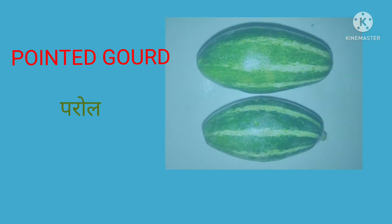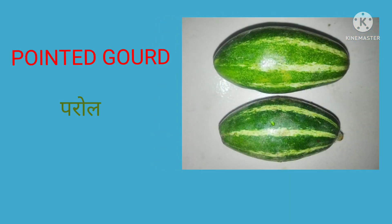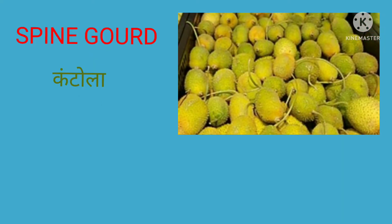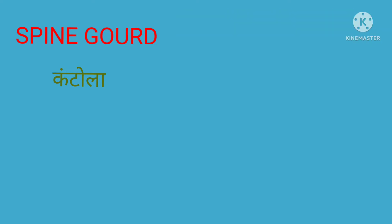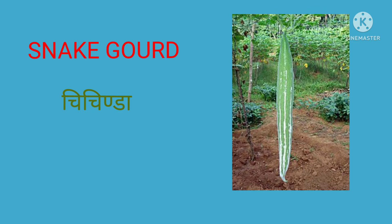This is bottle gourd, in Hindi it's called loki. This is pointed gourd, in Hindi it's called parwal. This is pine gourd, in Hindi it's called kakoda or kantola. This is snake gourd, in Hindi it's called chichinda.